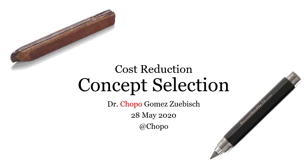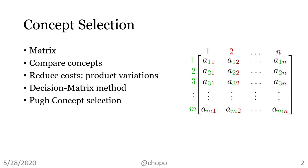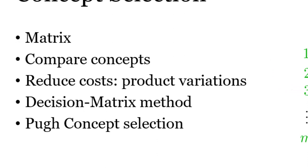Concept Selection for Cost Reduction by Chopo Gomez-Suebich. The concept selection is a mathematical matrix to compare concepts. If you're interested in cost reduction, this matrix will help you select product variations.